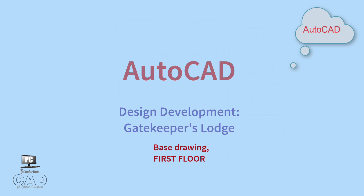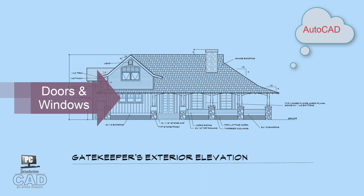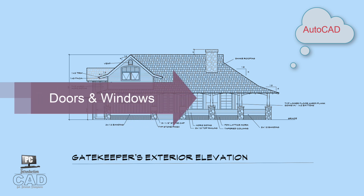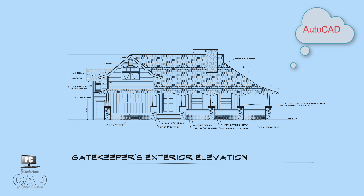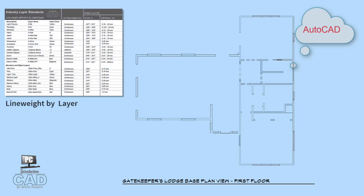The objective of this assignment is to begin organizing the AutoCAD file for the design development of the interior program. In this phase of the process, the exterior windows and doors have been located within the structure. These elements represent the design constraints within the overall project development. To start the assignment, download the .dwg AutoCAD file entitled Gatekeeper's Lodge Base Plan View, First Floor. You will also need to download the document entitled Line Weight by Layer.